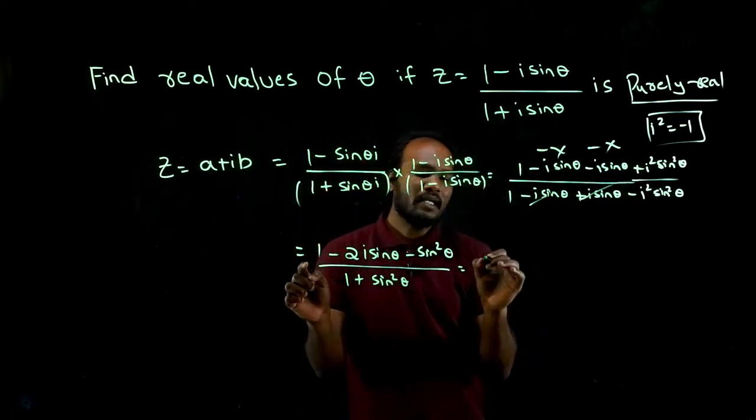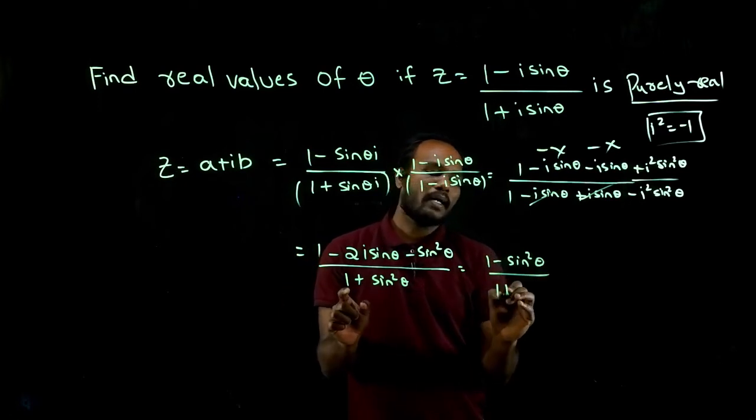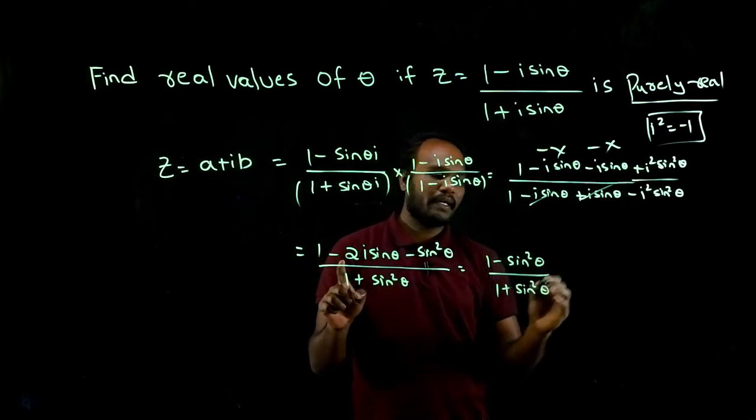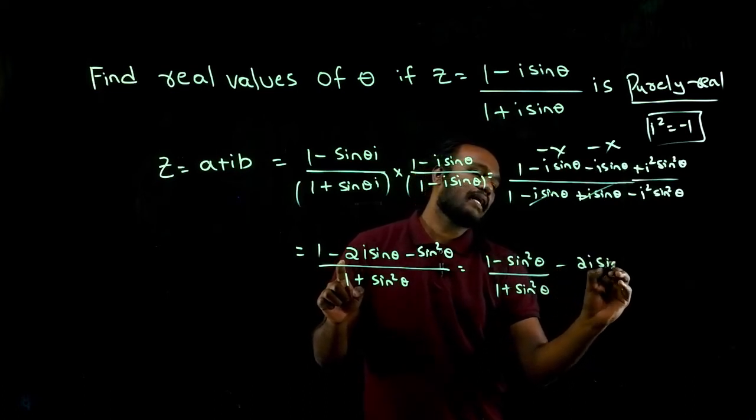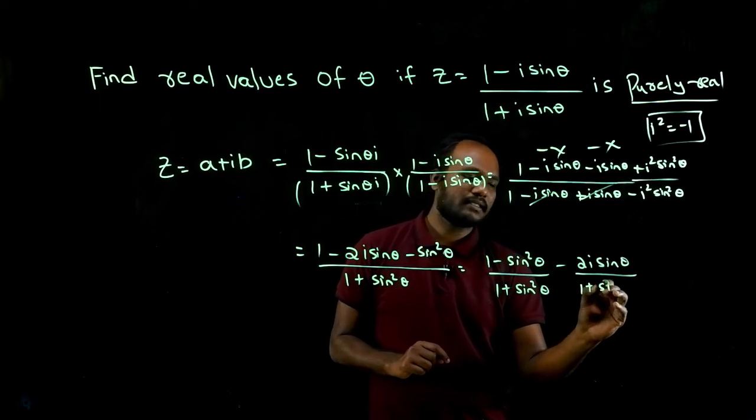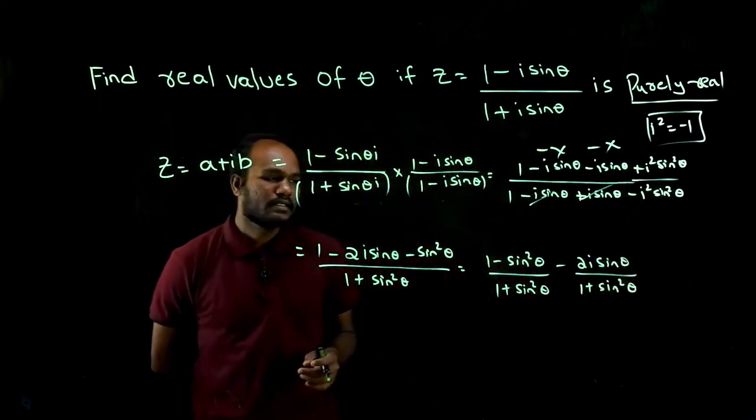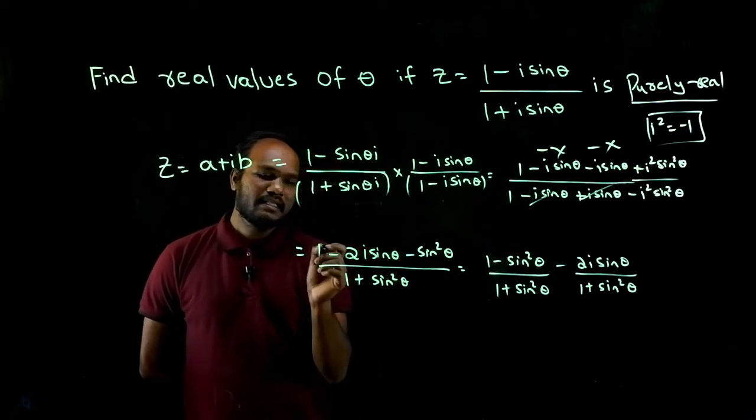See here, I will write one minus sine square theta divided by one plus sine square theta, and there is a minus two i sine theta. I will keep it that side, the denominator I will take one plus sine square theta. See here, this is real, this is real.